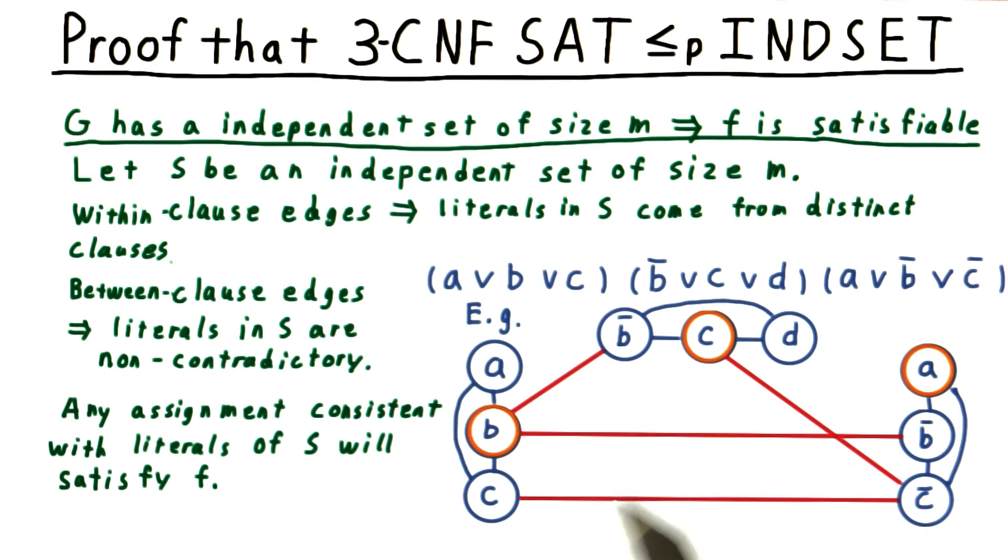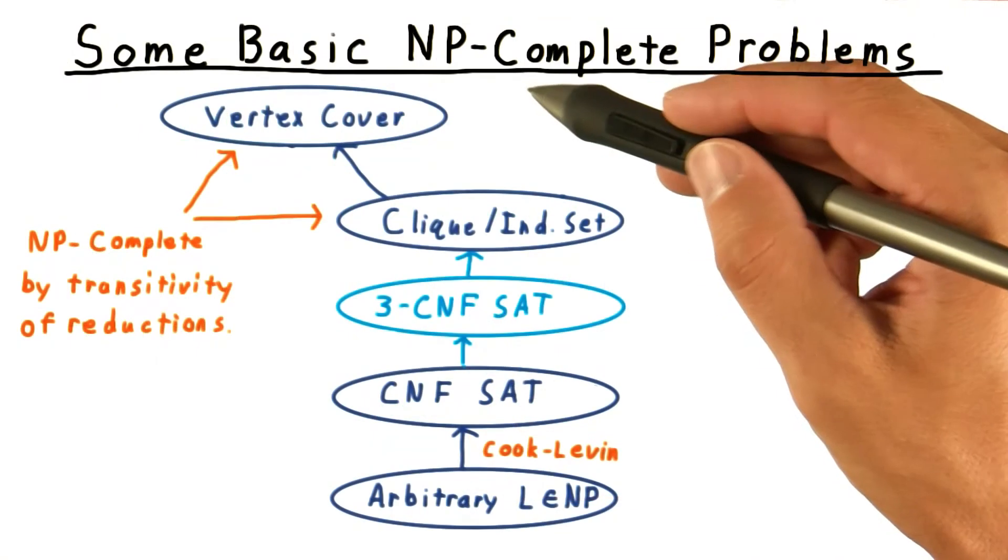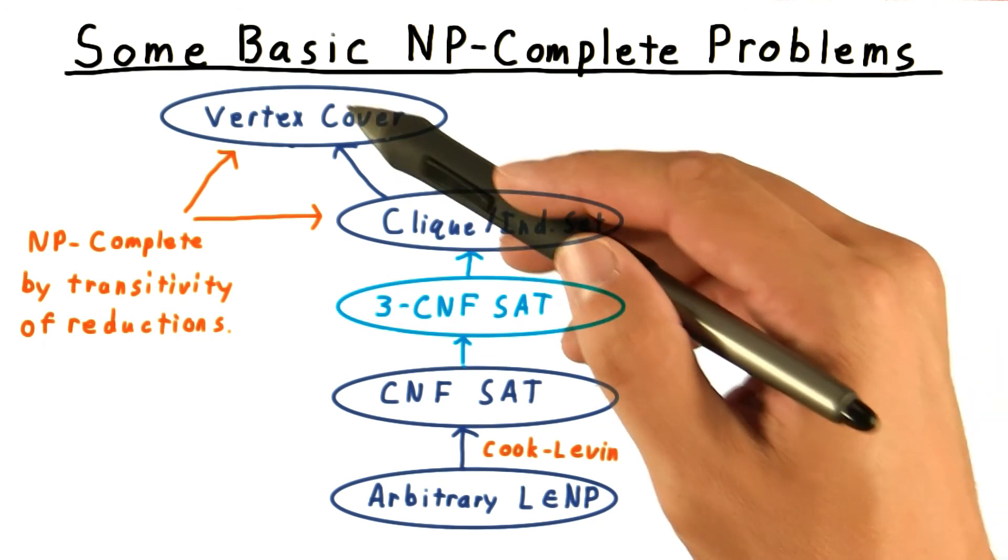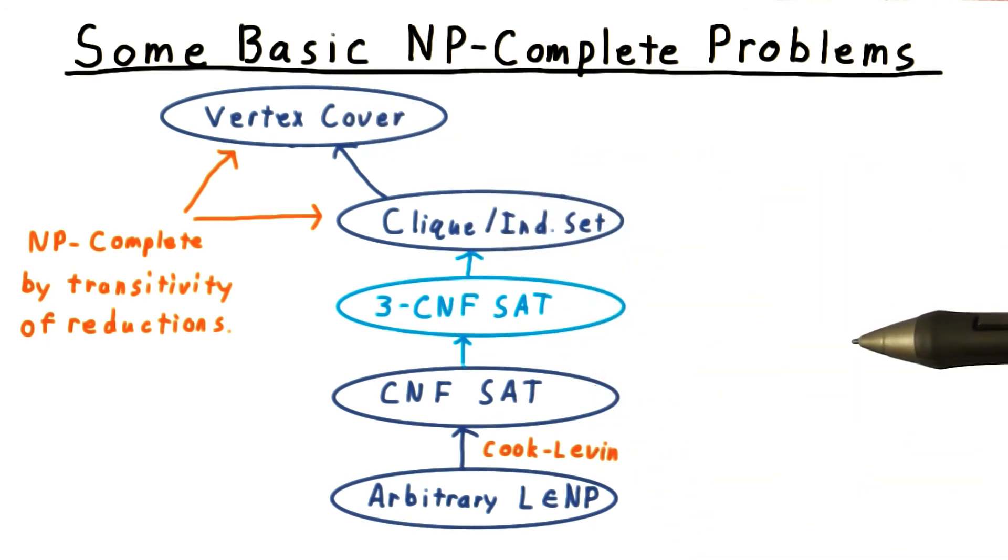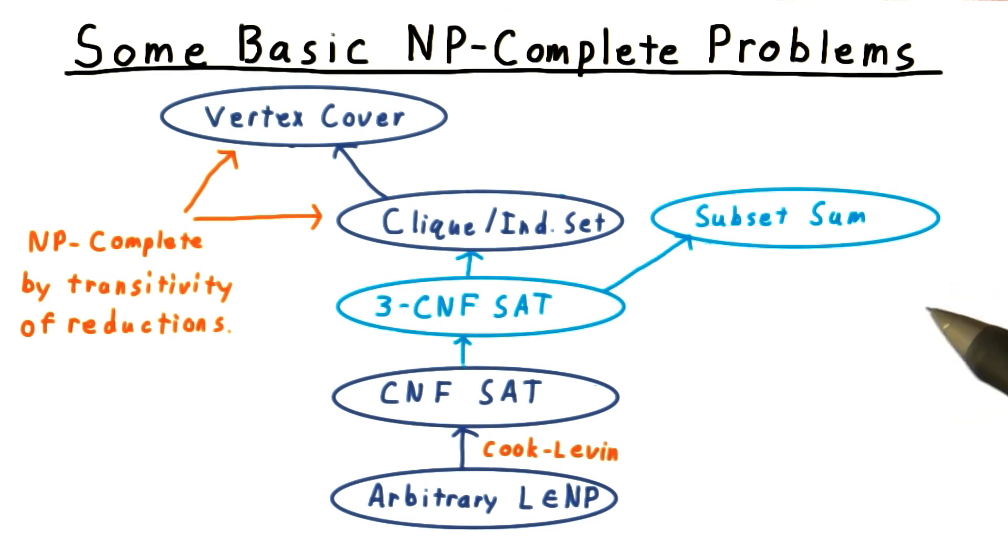So that completes the proof that independent set is as hard as 3CNF SAT. And that completes this chain here, showing that both independent set and vertex cover are NP complete. Now we're going to branch out, both in the tree here and in the type of arguments we'll make, by considering the subset sum problem.